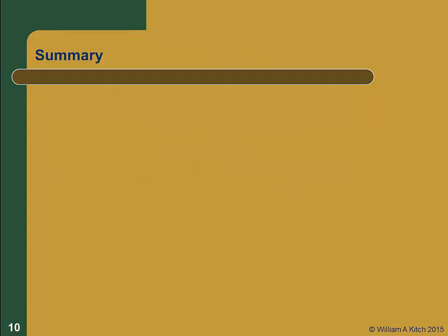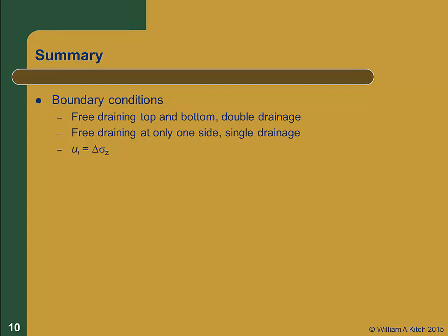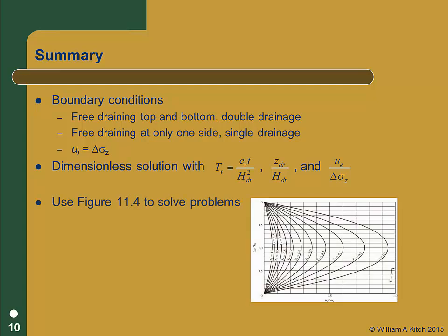Let's summarize. The solution we've developed to the consolidation differential equation is appropriate for either a doubly or singly drained system. It assumes the initial excess pore pressure is uniform and equal to delta sigma z, corresponding to a quickly applied load. If we have different drainage conditions or if the load is applied gradually, this solution is not appropriate. Our solution is in the form of dimensionless variables for time, depth, and excess pore pressure. We can use figure 11.4 to determine the excess pore pressure for any location within a consolidating layer at any time.